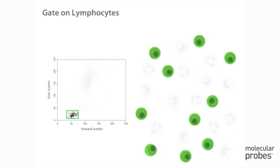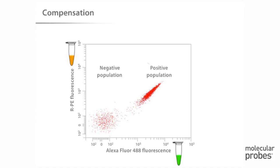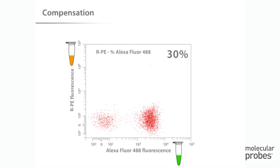Remember that each dot represents a cell and each cell has associated with it all data for scatter and fluorescence. By designating a region in this way, we can look at the various fluorescence and scatter properties of only the cells within the region using subsequent histograms and dot plots. Before proceeding further with analysis, we need to set compensation. Gating on lymphocytes and using data from the three single color controls, we can draw two-color dot plots of each color combination. This allows us to adjust the compensation so that the Alexa Fluor 488 values of the positive and negative populations in the RPE channel are about equal.